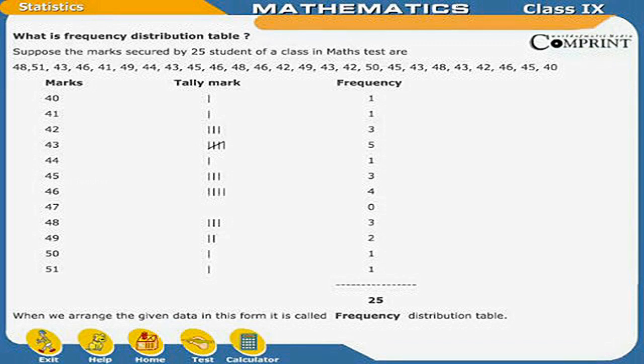we will make a table containing three columns: marks, tally marks, and frequency. In the marks column, we will write down all the marks from 40 to 51. In the frequency table, we will count the number of tally marks and write the same number in the frequency column. The sum total of the frequency column is 25. When we arrange the given data in this form, it is called a frequency distribution table.